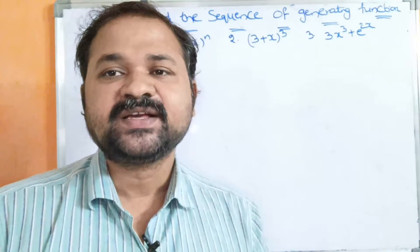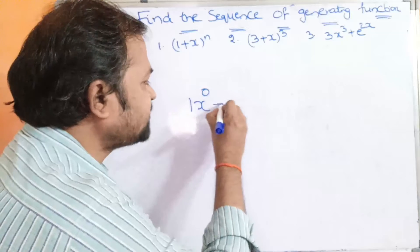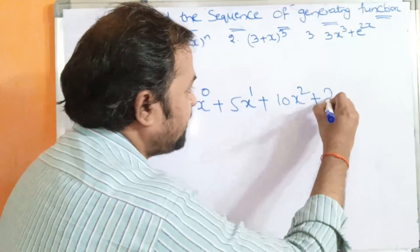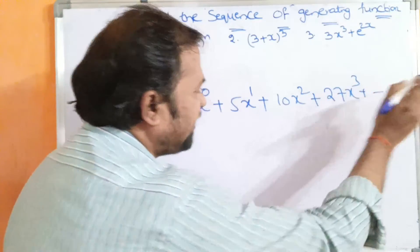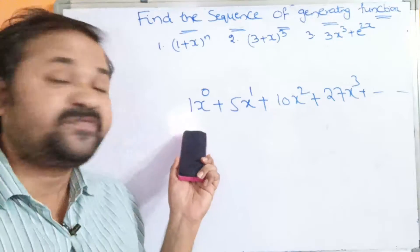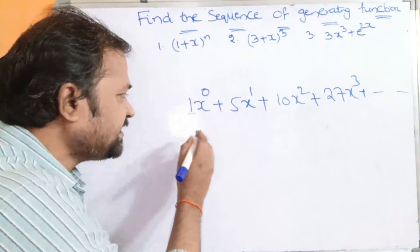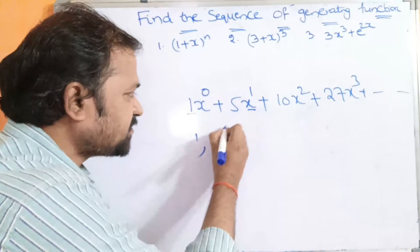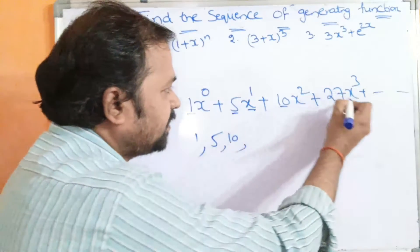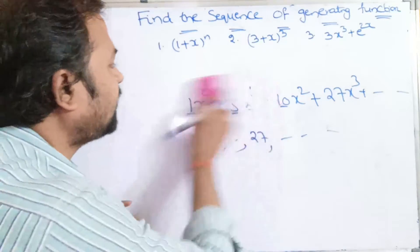What is a sequence? Sequence means the coefficients. For example, consider an equation like: 1·x⁰ + 5x¹ + 10x² + 27x³. The sequence means the coefficients associated with the corresponding exponents. So for x⁰ the coefficient is 1, for x¹ the coefficient is 5, for x² it is 10, and for x³ it is 27. So {1, 5, 10, 27} is the sequence.